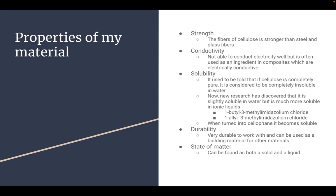So the properties of my material. The strength: the fibers of cellulose are very strong and are stronger than steel and glass fibers. Conductivity-wise, it is not able to conduct electricity well, but is often used as an ingredient in composites which are electrically conductive.